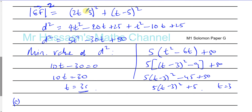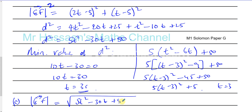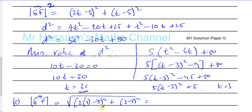We know the expression that gives the square of the distance is 5t² minus 30t plus 50. We need to find the magnitude of GF, which is the square root of that expression. Substituting t equals 3: the square root of (2×3 minus 5)² plus (3 minus 5)², which is the square root of 1² plus (−2)², giving the square root of 1 plus 4, so the minimum distance d equals root 5.